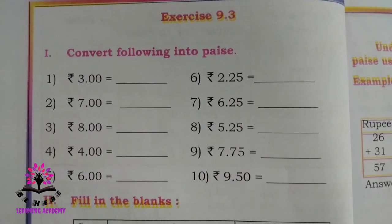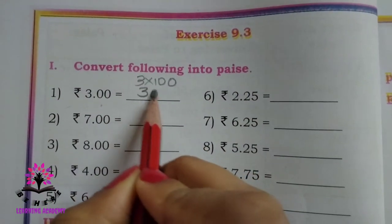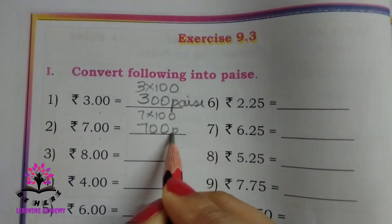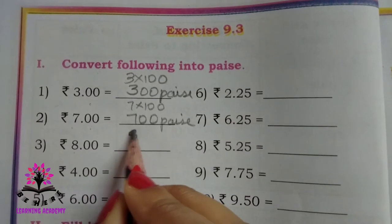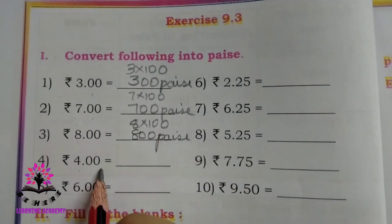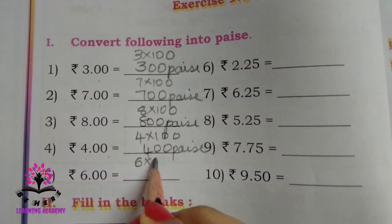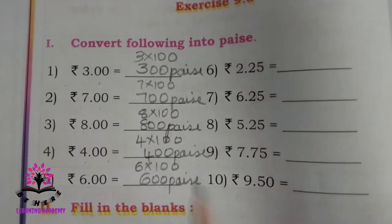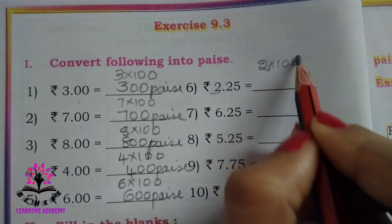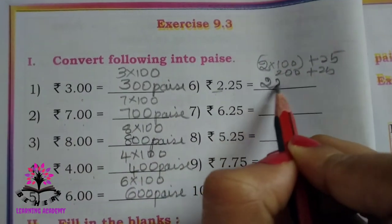Exercise 9.3 — Convert the following into paisa. 3 rupees: 3 × 100 = 300 paisa. 7 rupees: 7 × 100 = 700 paisa. 8 rupees: 8 × 100 = 800 paisa. 4 rupees: 4 × 100 = 400 paisa. 6 rupees: 6 × 100 = 600 paisa. 2 rupees 25 paisa: (2 × 100) + 25 = 225 paisa.